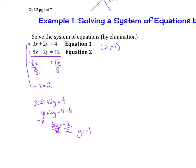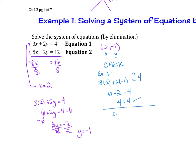We can always check to make sure this is correct. Take the ordered pair and plug it into both equations to verify. Plugging into equation 1: 3 times 2 plus 2 times negative 1 — does that equal 4? 6 minus 2 equals 4. Yes, 4 equals 4. Then checking equation 2: 5 times 2 minus 2 times negative 1 — does that equal 12? 10 plus 2 equals 12. Yes, 12 equals 12. So this is correct.